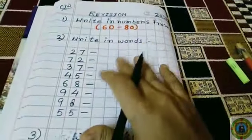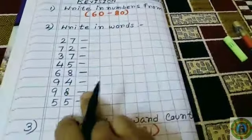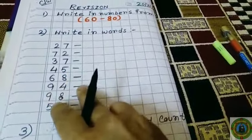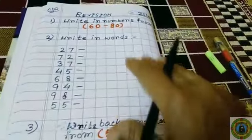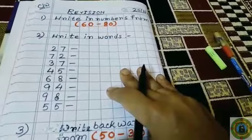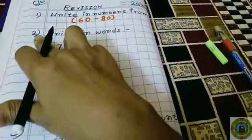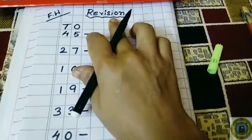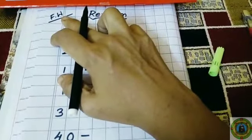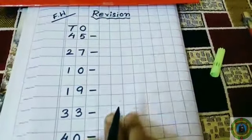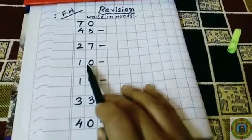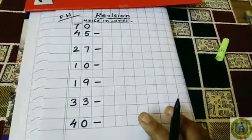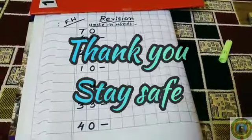In our last class revision work, I had given writing words for big numbers: 72, 94, 98, 55, 68. By mistake, that is not your syllabus. Those who have done it, no problem. Those who have not, no need to do it. Question number 2: Write in words — 45, 27, 10, 19, 33, 40. This work you have to do by yourself in your fair copy. Practice at home. Till then, stay safe. Bye-bye.